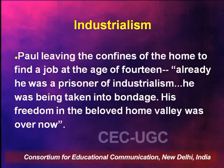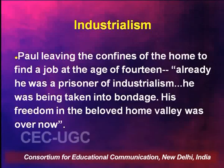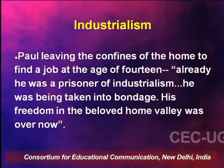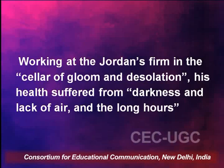These are the different dimensions of the novel — from the middle-class angle, from the class divide angle, from the industrial angle. A quote from the novel: Paul is fourteen and looking for a job, and the narrator says, 'Already he was a prisoner of industrialism. He was being taken into bondage. His freedom in the beloved home valley was over now.' The business world, the regulated world of industrialism — the cellar of gloom and desolation — his health suffers for it. And we know William dies in the novel because he is unable to cope with this world of industrialism.